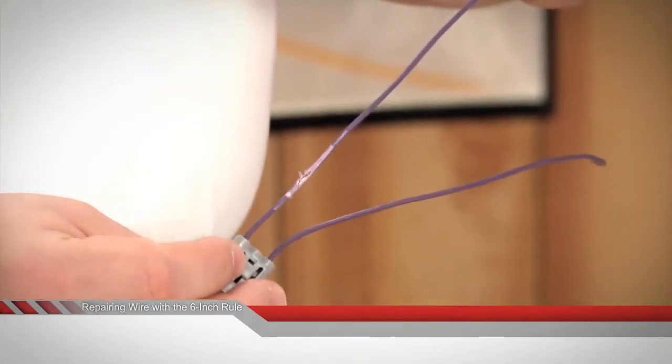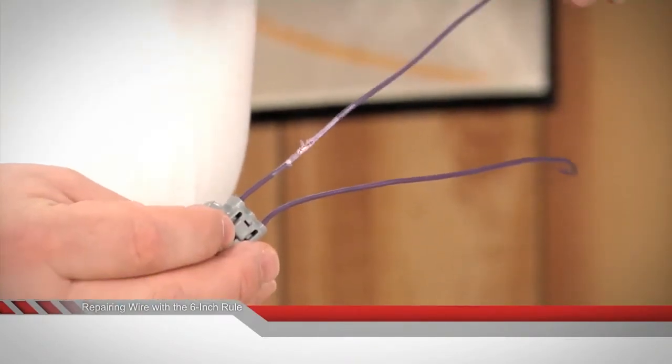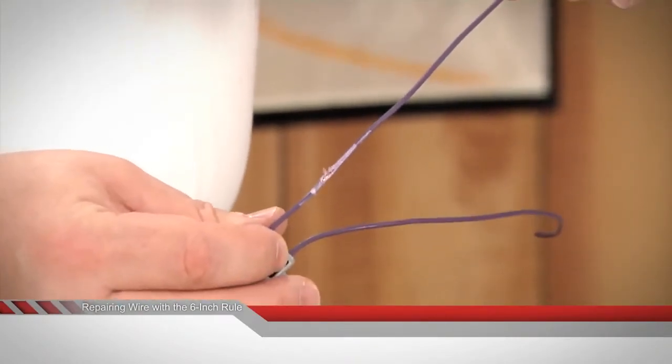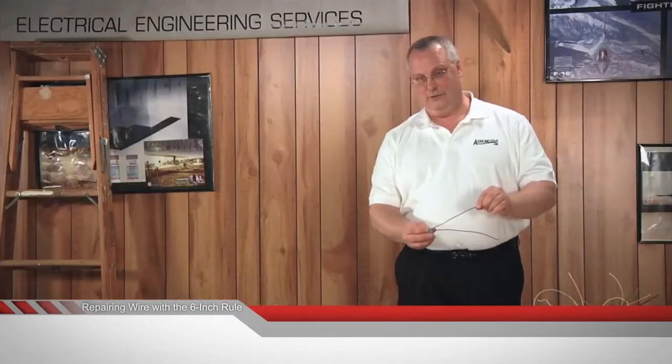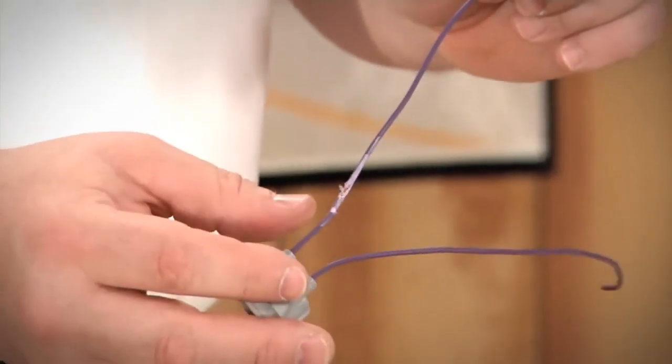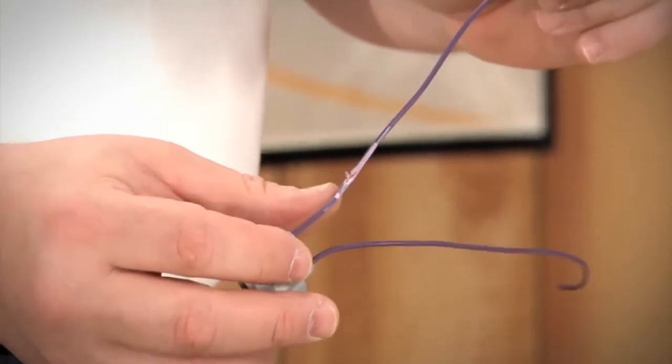Here we have a wire that's been damaged within six inches of a termination point. Clearly it's about an inch and a half. What you need to do is drive the splice back. You're going to have to put a splice into this wire, but not at this point.